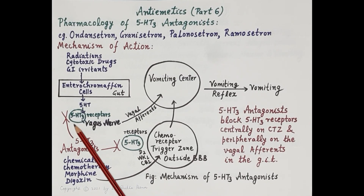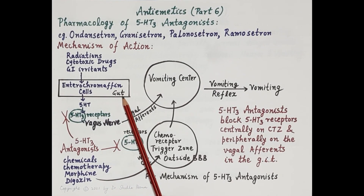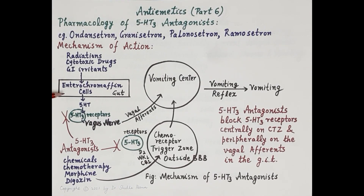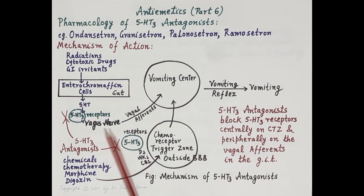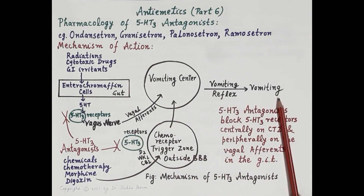Apart from the CTZ, 5-HT3 receptors are also present peripherally. More than 95% of 5-hydroxytryptamine (serotonin) in the body is present in the enteric nervous system of the GI tract. Emetogenic substances like radiations, cytotoxic agents, and gastrointestinal irritants stimulate release of 5-HT from enterochromaffin cells in the gut. 5-HT then binds to 5-HT3 receptors on vagal afferents, which transmit emetogenic impulses to the vomiting center, causing vomiting.